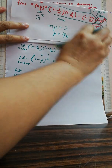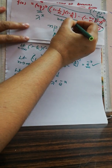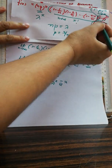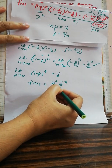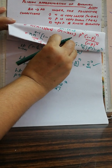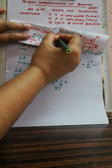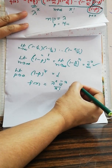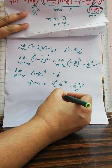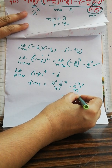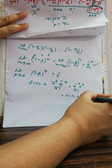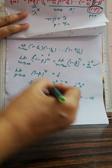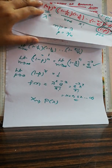The limit gives us e raised to minus lambda, times lambda raised to x, divided by x factorial. This is the PMF of the Poisson distribution, where x takes values 0, 1, 2, 3, ... to infinity. So X follows P(lambda). This completes the proof that the binomial distribution approximates the Poisson distribution.